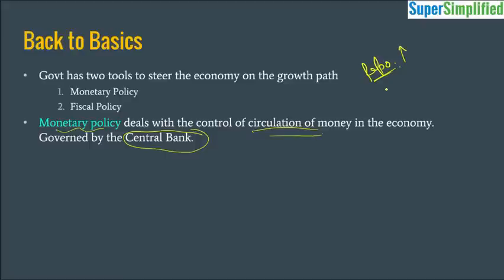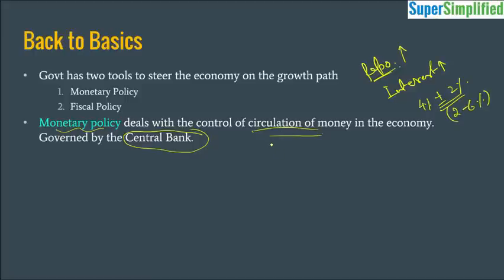When RBI increases the repo rate, the banks increase their interest rates. Hence loans become costlier, so people take lesser loans and the money supply in the economy reduces. When the money supply reduces, the demand reduces, so demand-driven inflation in the economy can be controlled by this method. This is usually done to keep inflation in check within the official target of 4% plus or minus 2%, so the range is 2 to 6%. On the opposite side, by reducing the repo rate, it signals banks to cut interest rates so that the supply of money increases in the economy.